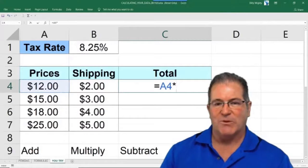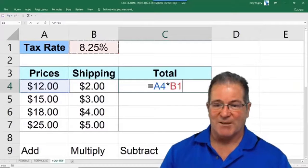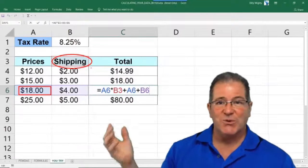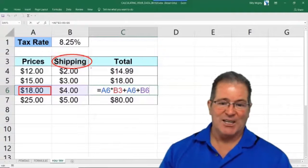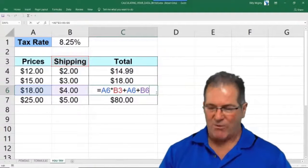Multiply times whatever's in B1, which is my tax rate. So, do you know how to multiply numbers times letters? You can't. That's why we have a value error right here.